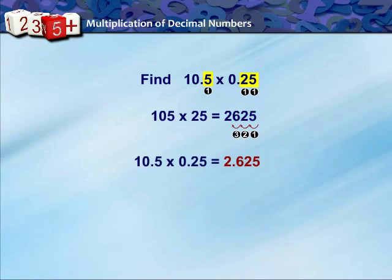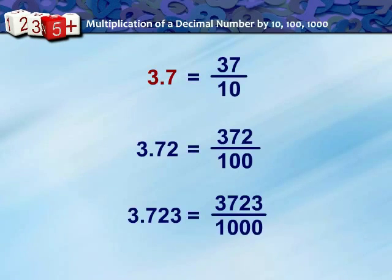You have observed that 3.7 is 37 upon 10, 3.72 is 372 upon 100, 3.723 is 3723 upon 1000. So, depending on the position of the decimal point, the decimal number can be converted to a fraction with denominator 10, 100, or 1000 etc.